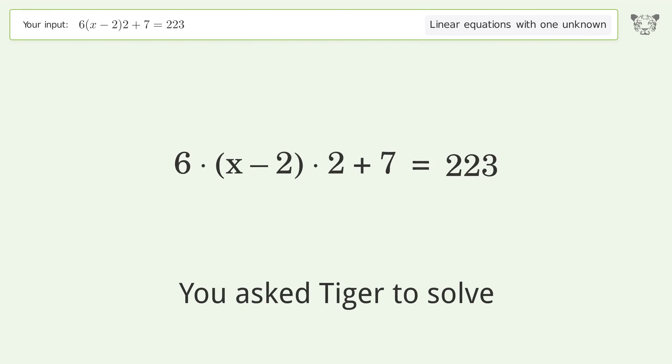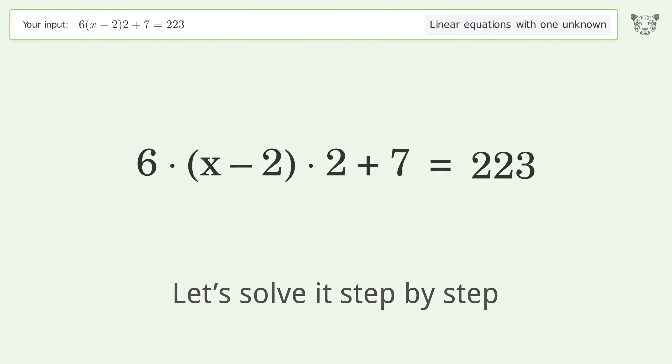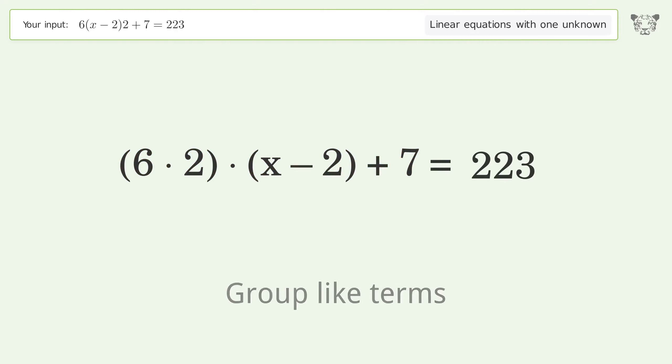You asked Tiger to solve this. It deals with linear equations with one unknown. The final result is x equals 20. Let's solve it step by step. Simplify the expression, group like terms, multiply the coefficients, and expand the parentheses.